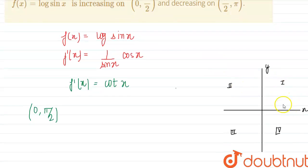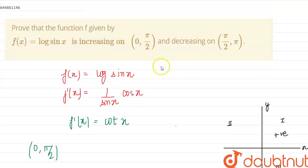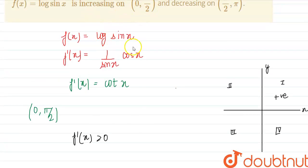we have cot x as positive as all the trigonometric functions are positive in the first quadrant. So cot x will also be positive. So in (0, π/2) this will be positive only. So f'(x) > 0 for the first quadrant. So this means it is increasing in (0, π/2).